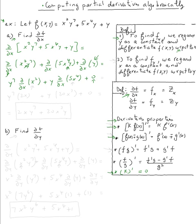Now we just take the regular derivatives. The partial of x² with respect to x is 2x, and the derivative of 5x⁴ with respect to x is 20x³. So the final answer is 2xy⁷ + 20x³y.